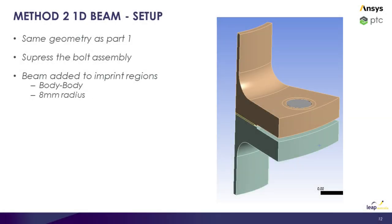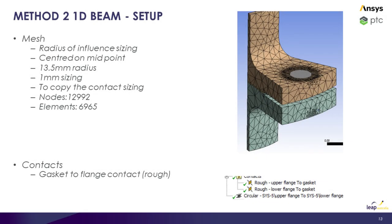Now let's begin using method two. This method uses the same geometry as case one but removes the physical bolt and replaces it with a beam model. The beam ends are scoped to the imprints of the bolt head and the nut onto the flanges. The bolt has an 8mm radius and is a body-body contact. The mesh was kept similar to case one, using a sphere of influence on the contact surfaces. Remaining gasket contacts were kept as rough, and loading and boundary conditions were the same as case one.